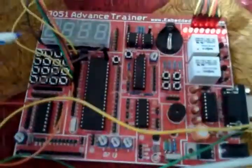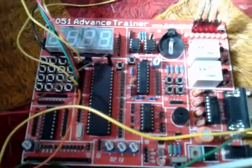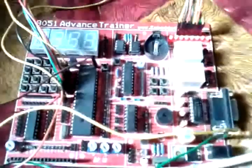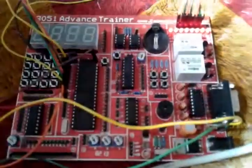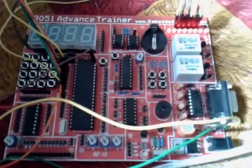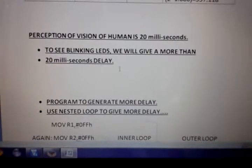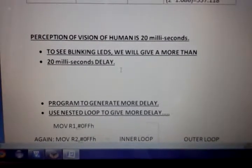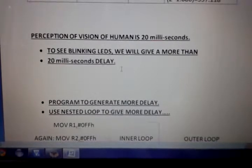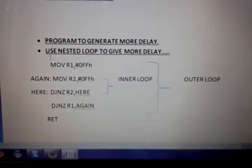Here is port P1 which is connected to the LEDs. You can see that the LEDs are not blinking because we are giving less than 20 milliseconds of delay. The persistence of vision of humans is 20 milliseconds, so to see LEDs blinking we need to give more than 20 milliseconds of delay.